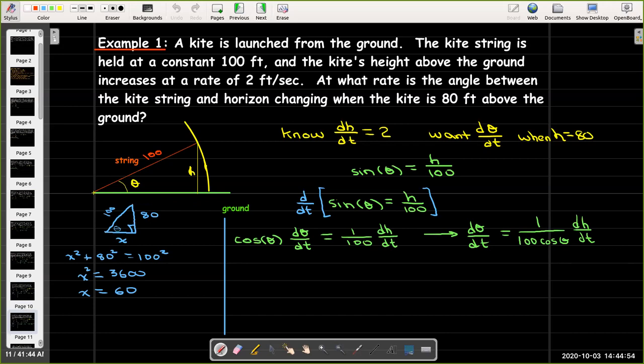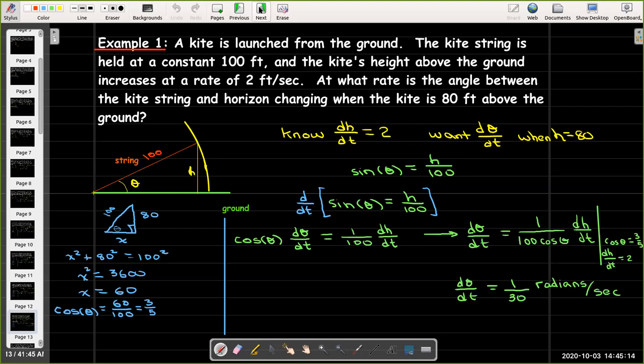So, that tells me that x would be 60. Now, I can just remember that cosine of theta is adjacent over hypotenuse. So, cosine of theta would be 60 over 100, which simplifies to 3 over 5. So, if I put in 3 over 5 for cosine theta, if I put in 2 for dh/dt, I find that dθ/dt is 1 over 30 radians per second.